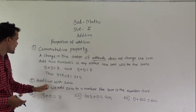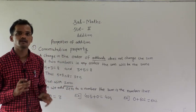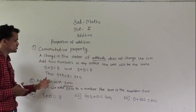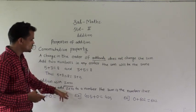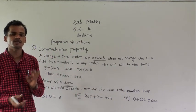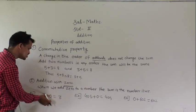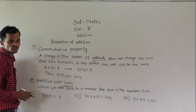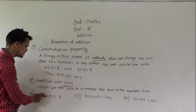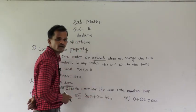The next property is addition with 0. There is no value for 0, so if we add 0 to any number, we will get that same number as the sum. When we add 0 to a number, the sum is the number itself. See the example: 3 plus 0, we will get 3 only. 405 plus 0, we will get 405 only.